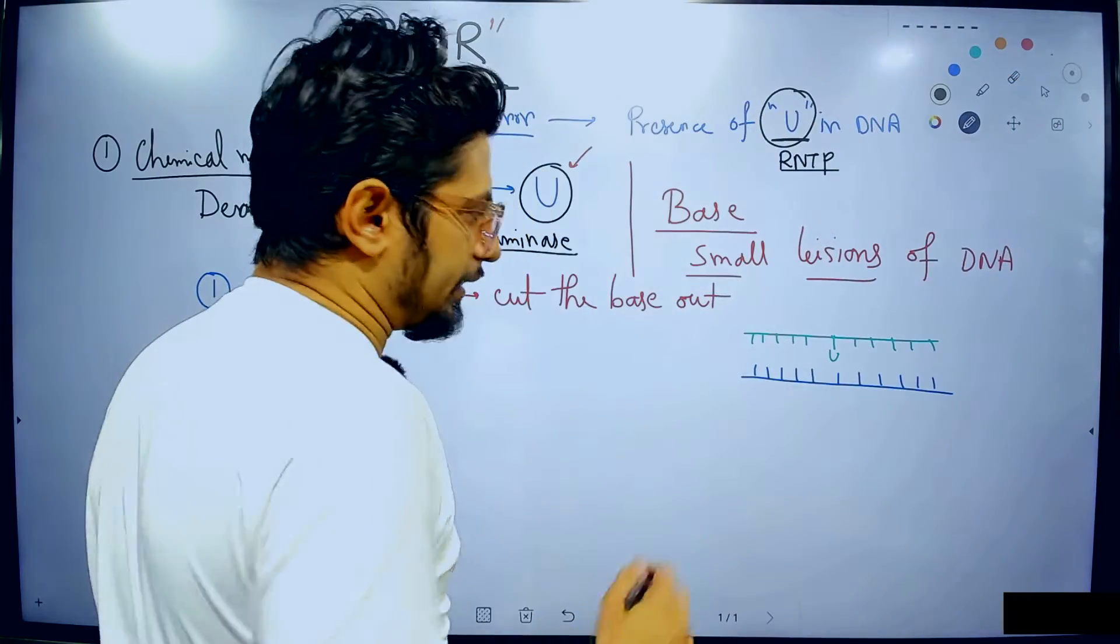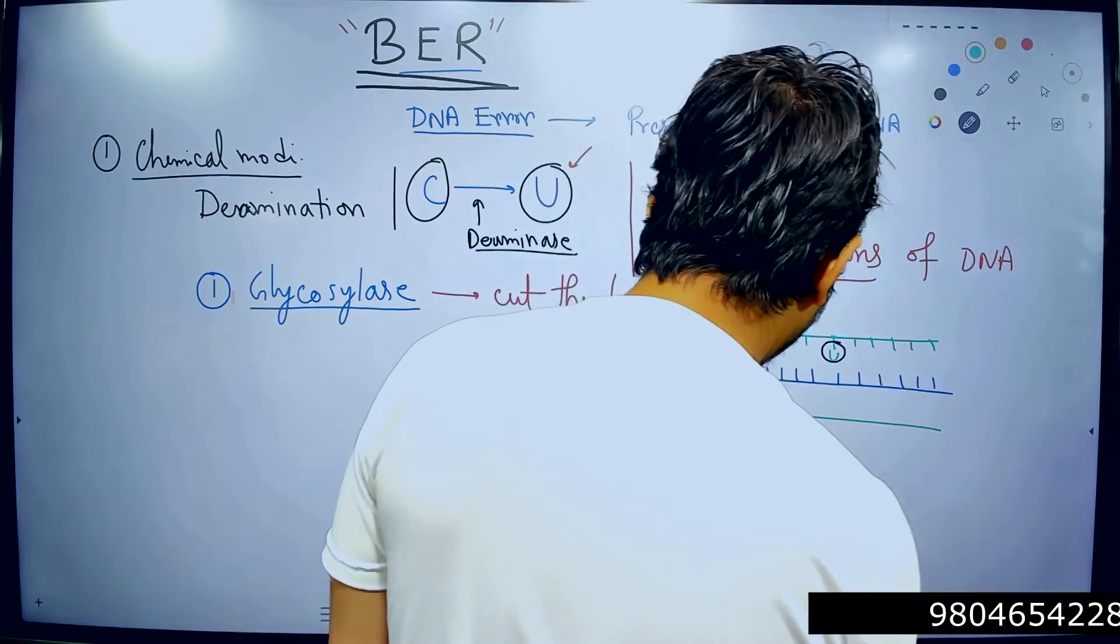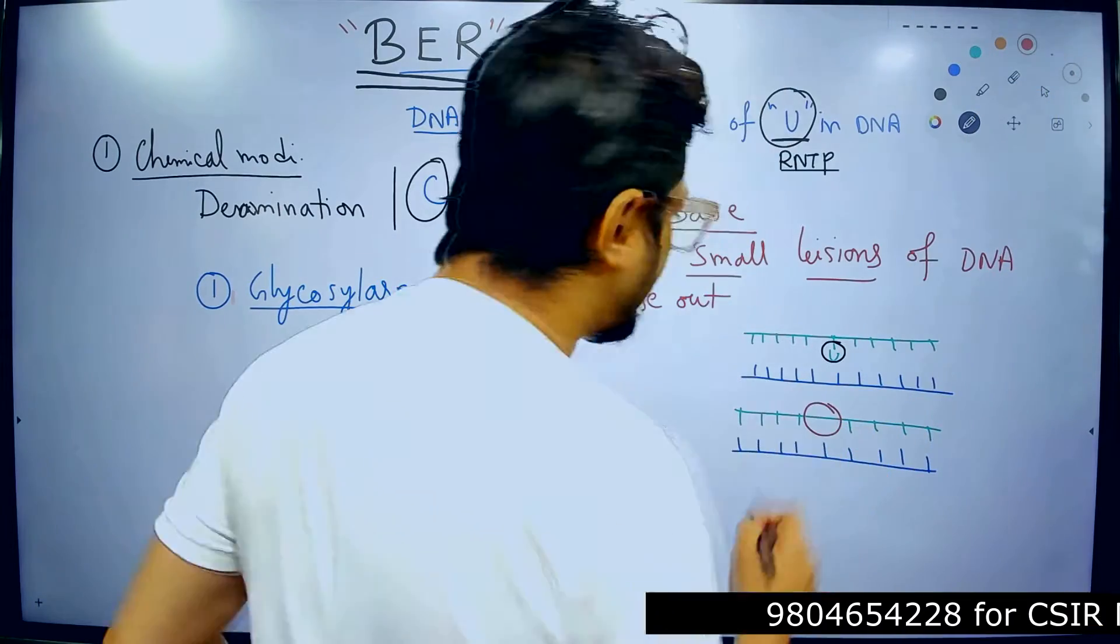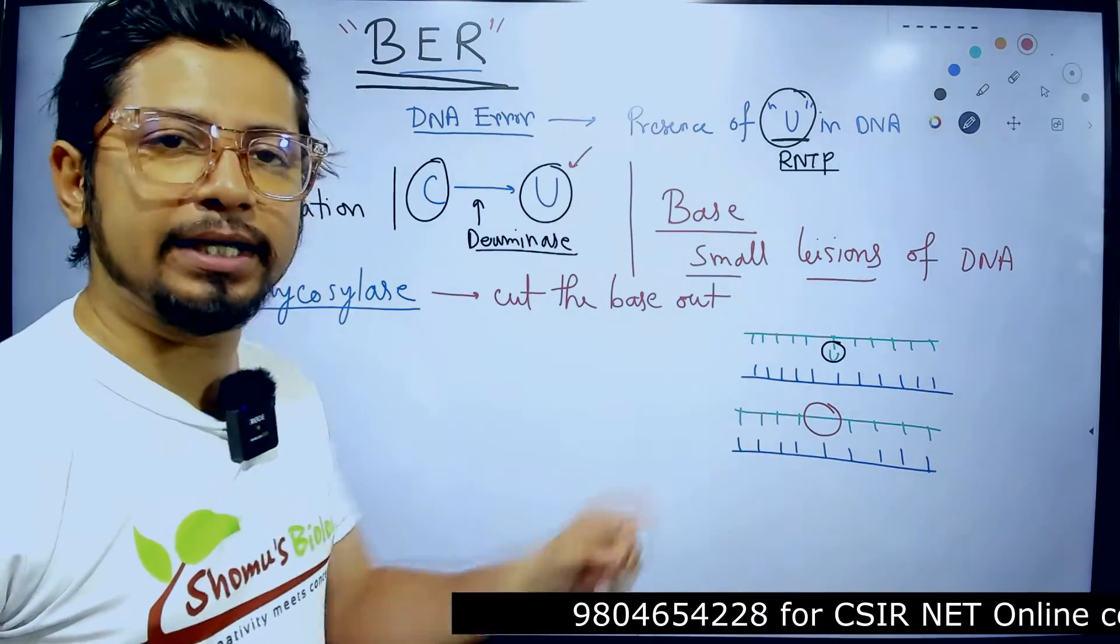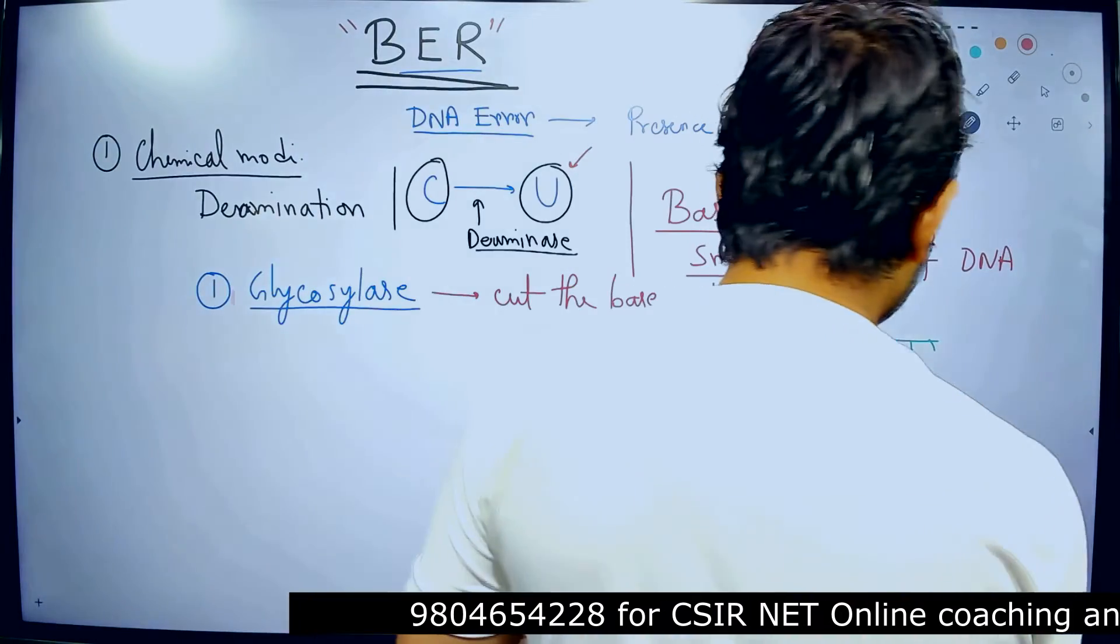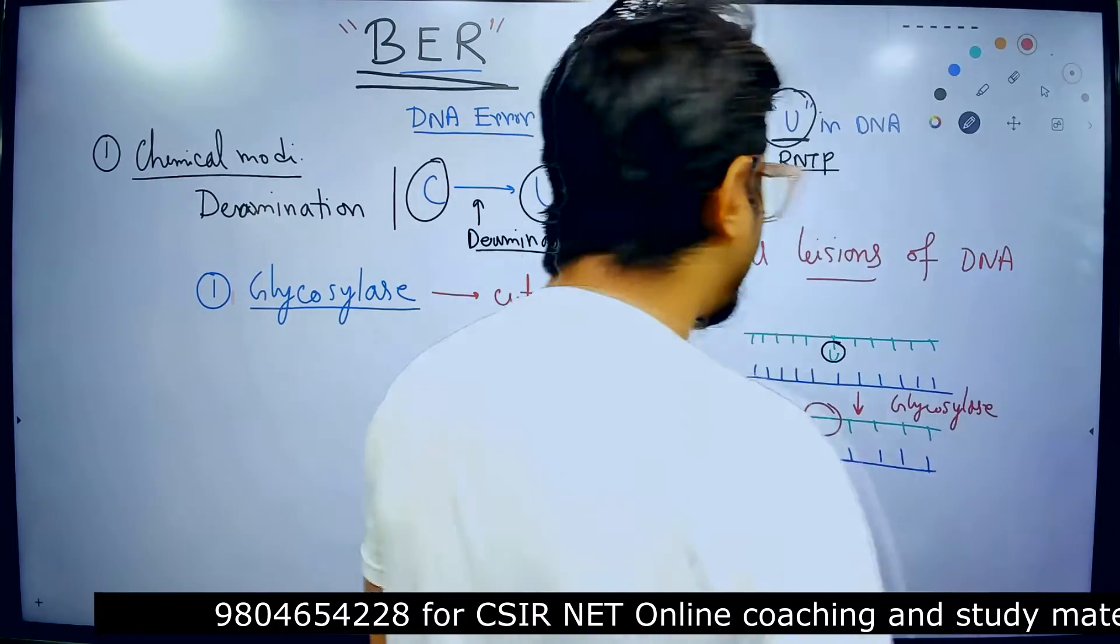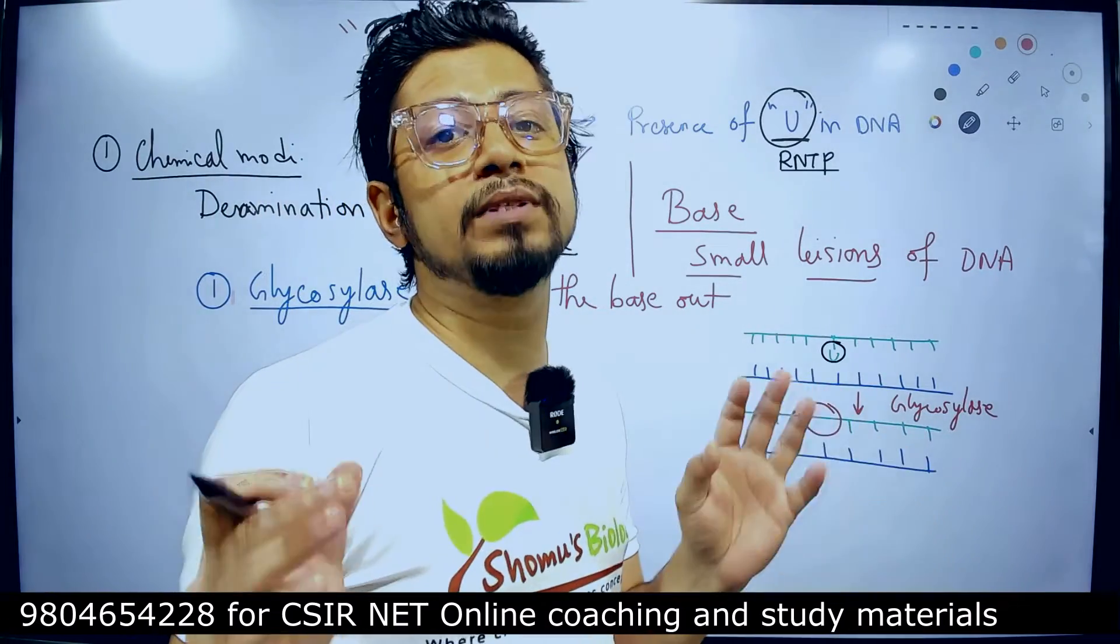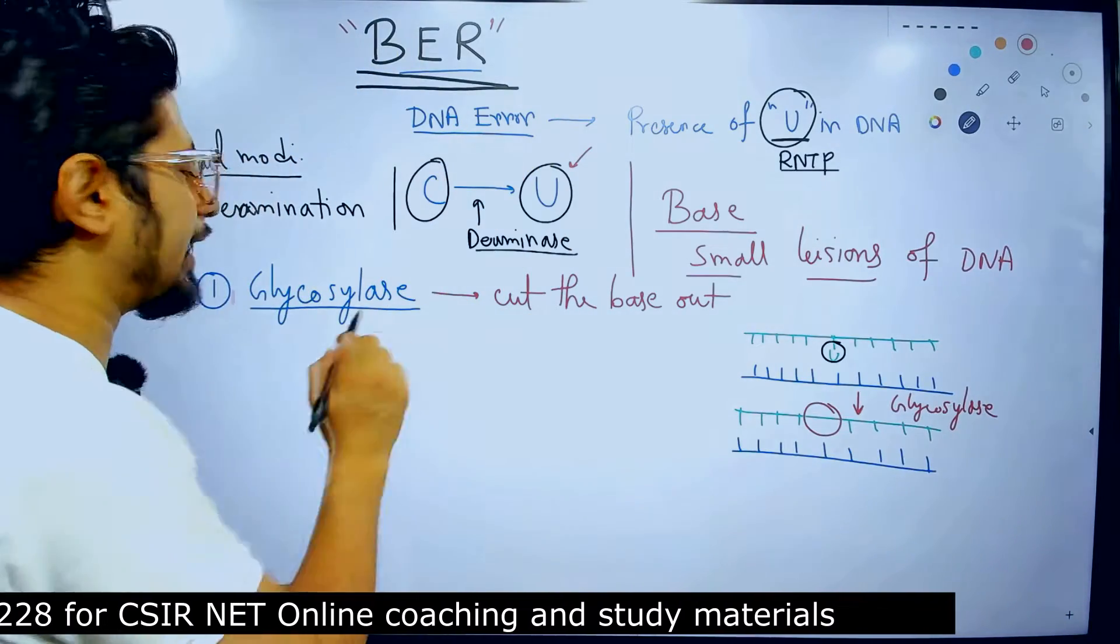Now the job here is basically to cut this portion out. So, when you cut this portion out, we will end up in a structure something like this. If you check here, this area is now having a gap, but the phosphodiester bond which is shown in green color remained intact. So glycosylase activity only cuts out the portion of the nucleotide but not the overall nucleotide from the strand. So, the phosphodiester bond remains intact after glycosylase activity.